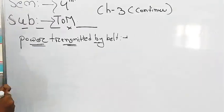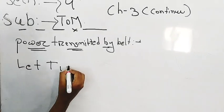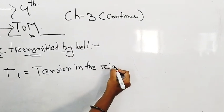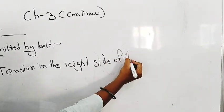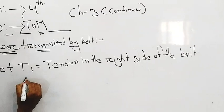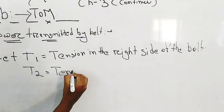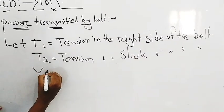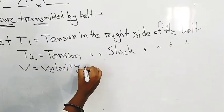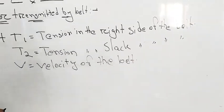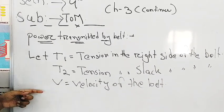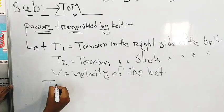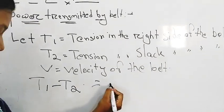So power transmitted by belt. First, let T1 is tension in the right side of the belt. Let T2 is equal to tension in the slack side of the belt, and V is equal to velocity of the belt. The effective tension or force acting at the circumference of the drift and pulley is difference between the two tensions, means T1 minus T2. It is called effective driving force.